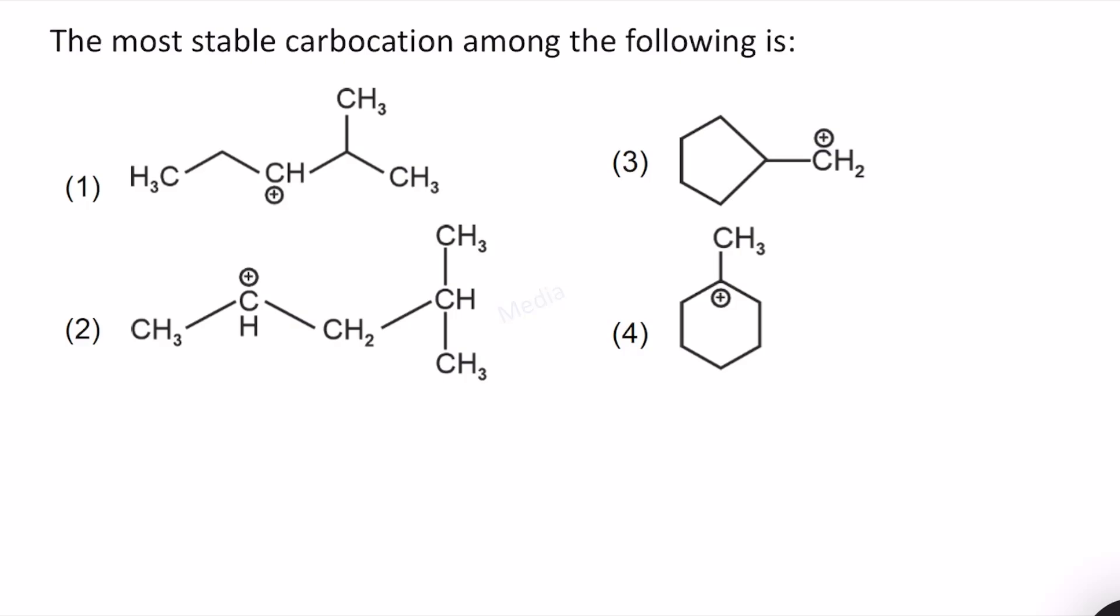What is the most stable carbocation among the following? We know that carbocation stability depends on the extent of hyperconjugation. The delocalization of electrons of sigma bond is what is called as hyperconjugation.